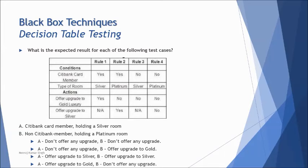Test case A: a Citibank card member holding a silver room. Citibank card member means yes — that's rule one and rule two — and holding a silver room points to rule one. So the action is: offer upgrade to gold luxury. Test case B: a non-Citibank member holding a platinum room, which goes to rule four where it's 'no' and platinum — and the result is no offer or upgrade is given to that person under rule four.